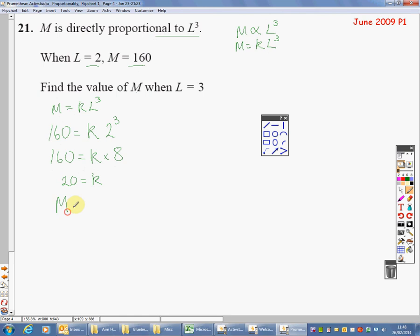Don't stop because I'm answering my question. Find the value of M when L is 3. But there's my formula. L is 3. M equals 20 times by 3 cubed. 3 cubed is 27. So M equals 20 times 27. 2 times 27 would be 54, so 20 times 27 would be 540. M is equal to 540. There's no units in the question, so just 540.